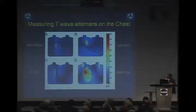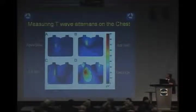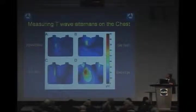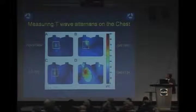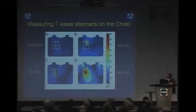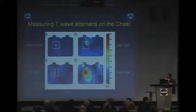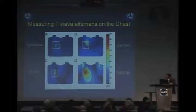This data shows recordings from four patients, A, B, C, D. On the left side is the front of the chest, and on the right side is the back of the chest. In all four cases, the alternans magnitude is always in the very center of the chest. This is very convenient for us — we can now record in exactly the same way in all our patients.